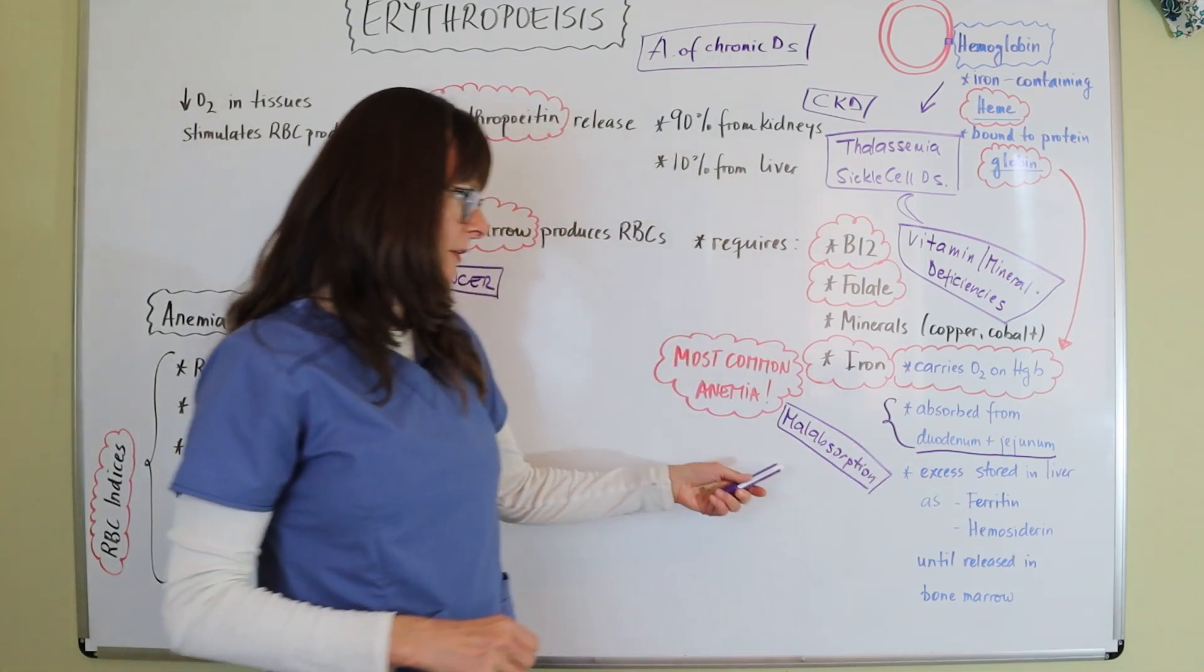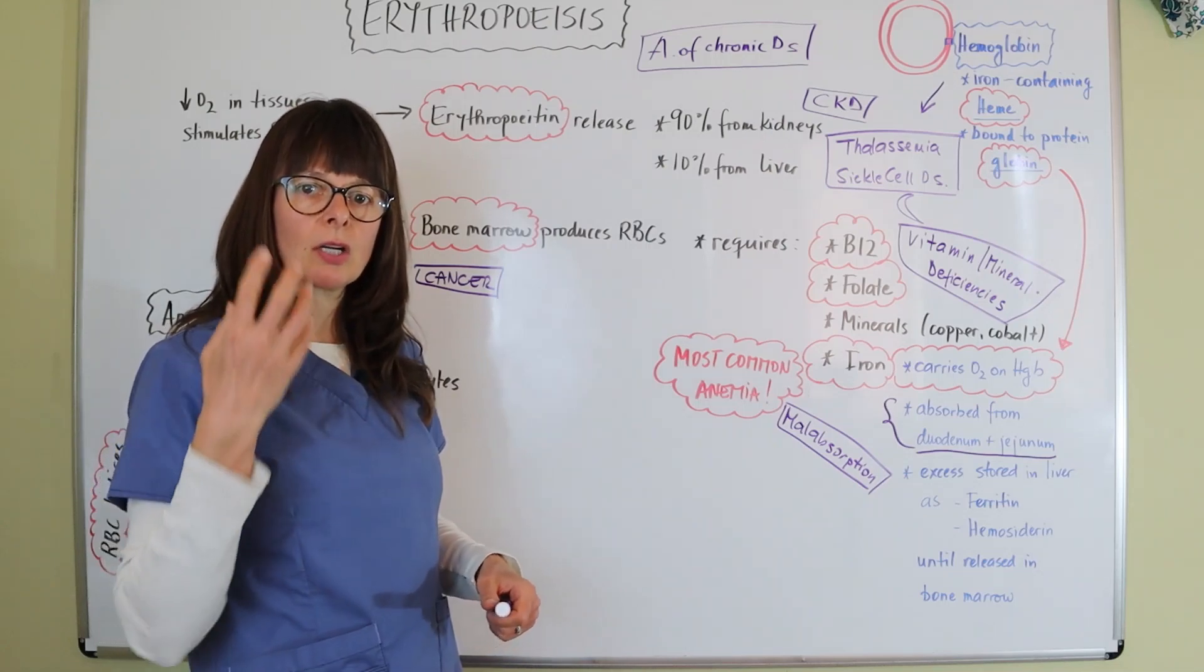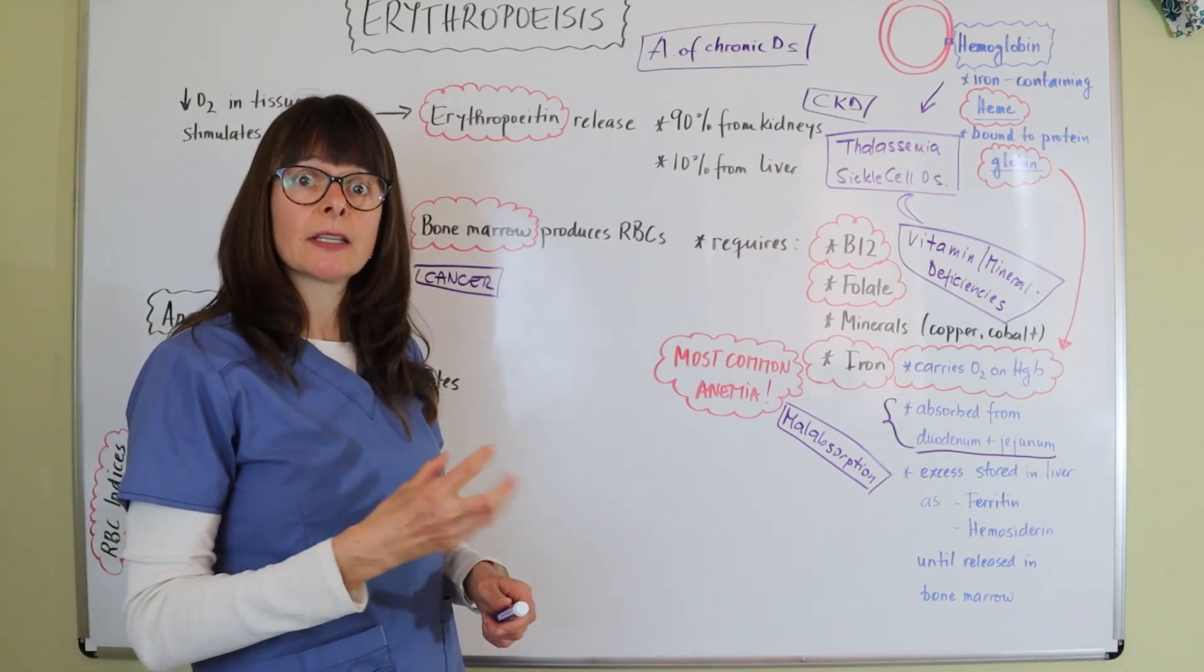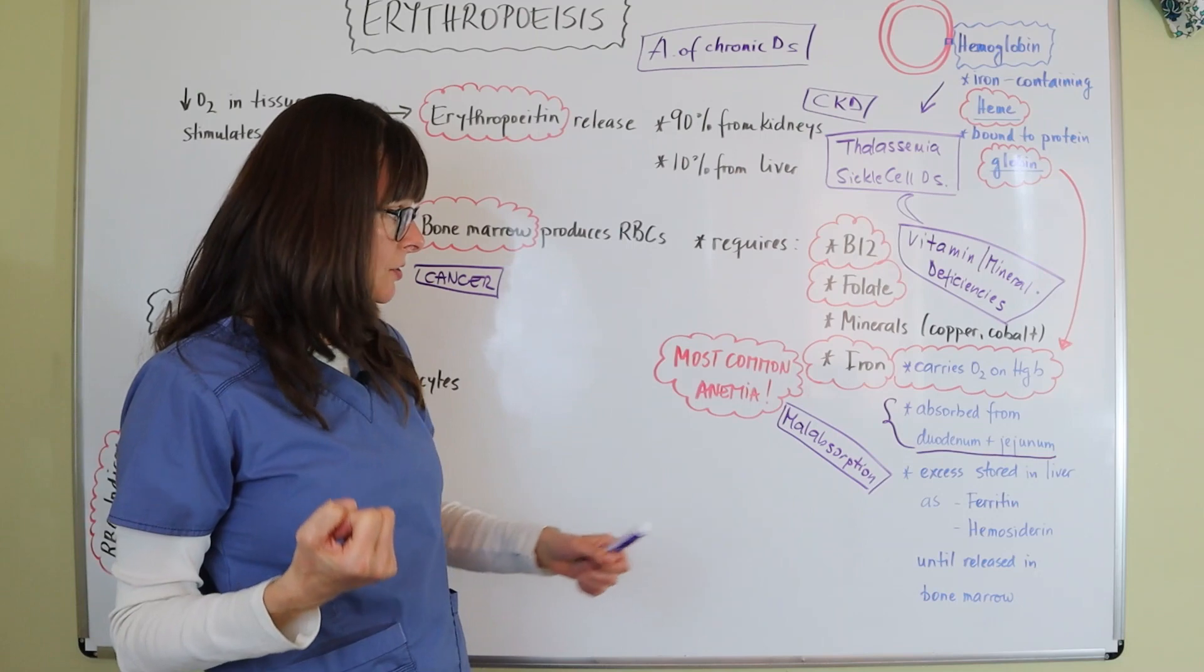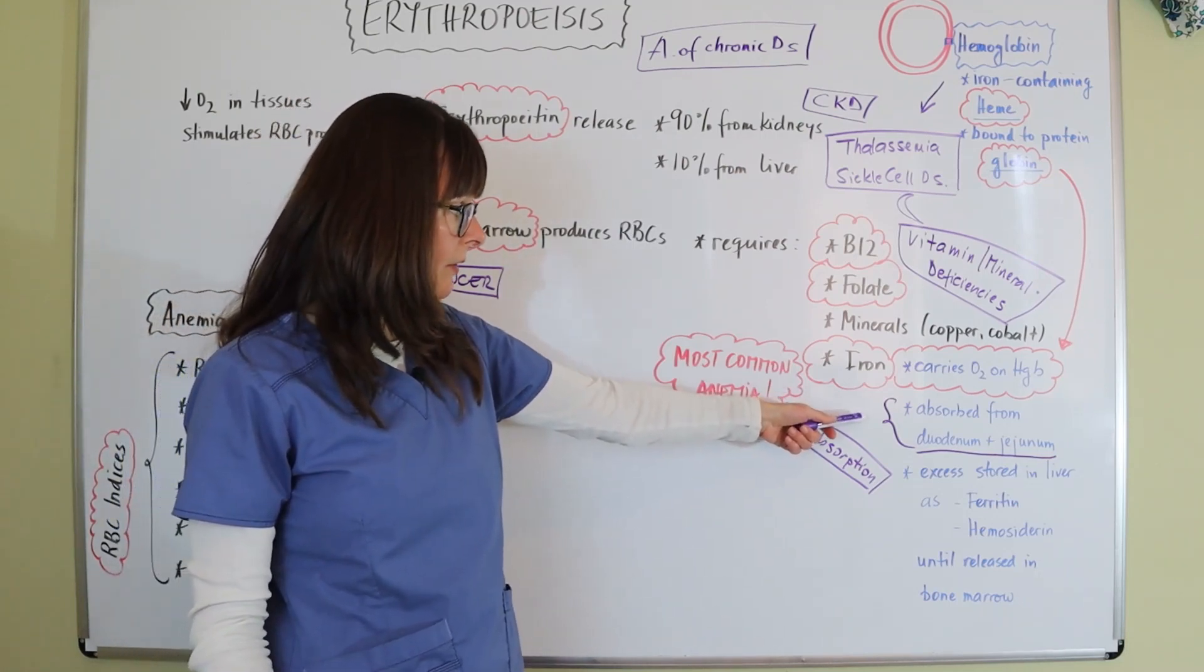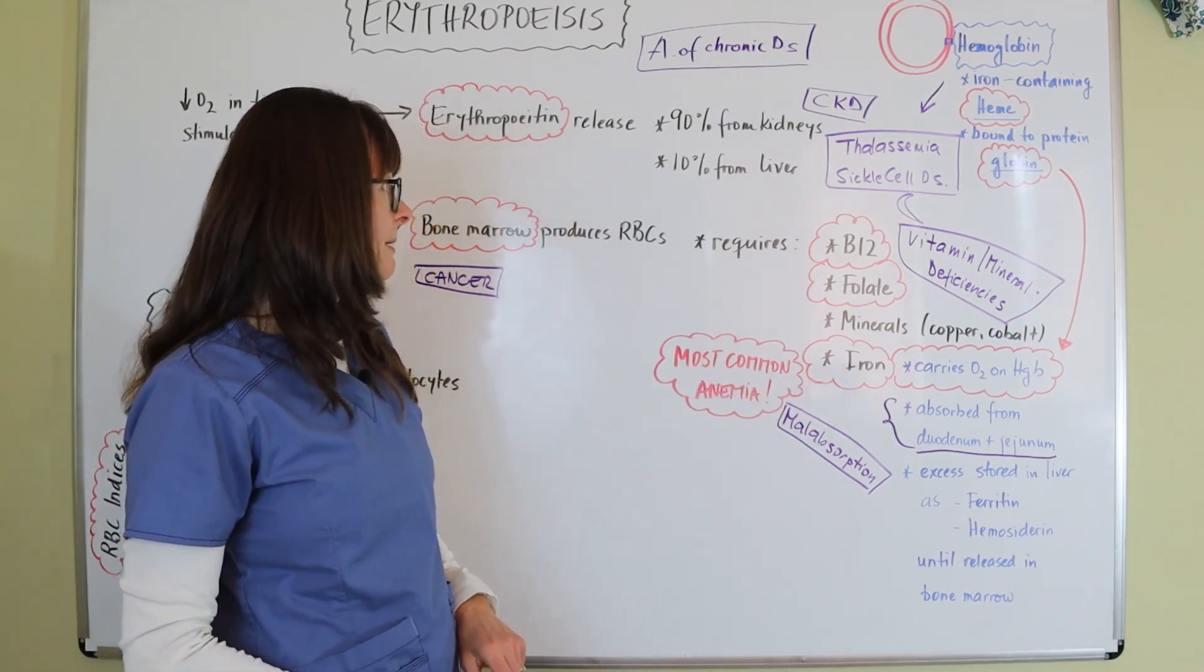Or maybe they have some sort of intestinal obstruction that requires removal or cancer, then we can't absorb the iron. And then again, we're going to end up with iron deficiency anemia.